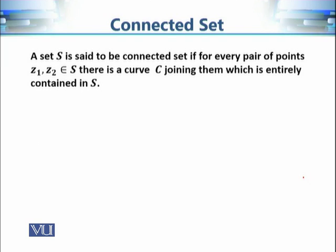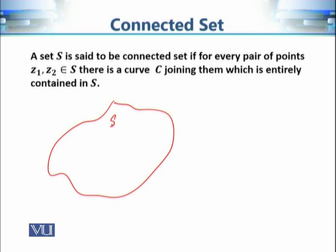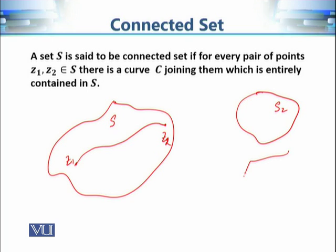A region or subset S of the complex plane is connected if for every pair of points in S there is a curve joining them that is entirely contained in S. For example, in a simply-shaped set S, any two chosen points can always be joined by a curve that remains within S. If we consider a set S2 consisting of two separate components A and B, so S2 = A ∪ B...